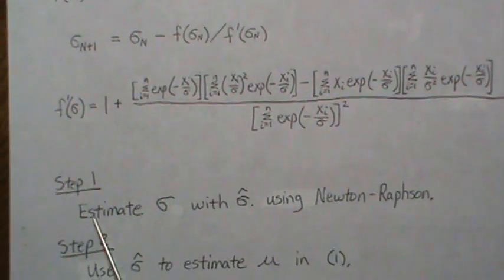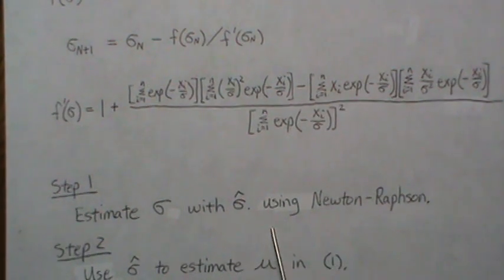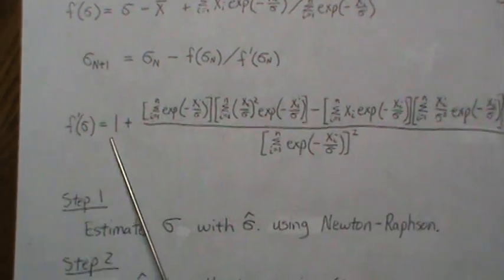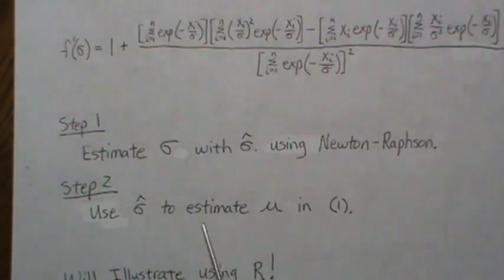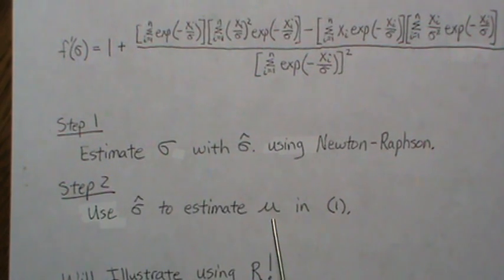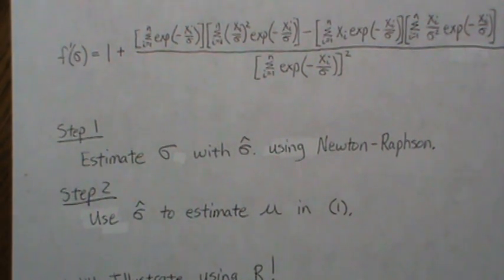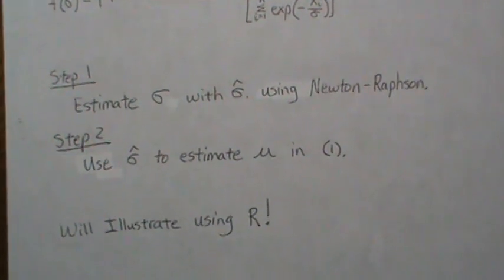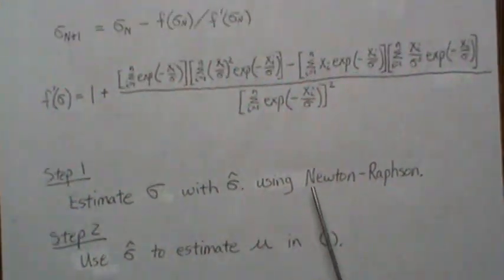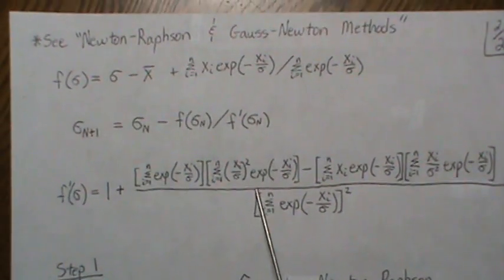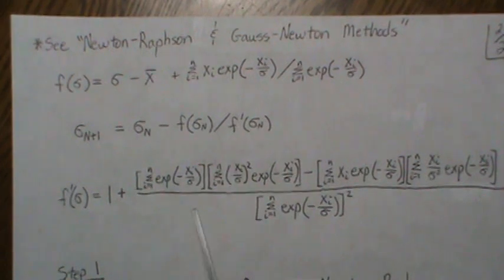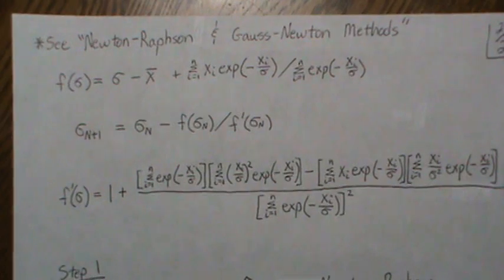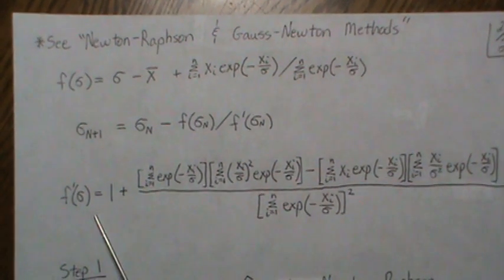So the procedure is: step one, estimate σ̂ using the Newton-Raphson iteration; step two, plug σ̂ back into the formula for μ̂. Those are the maximum likelihood estimates for the Gumbel distribution. In part two we'll implement this in R, coding these equations and iterating 10, 20, or 30 times until σ̂ converges.